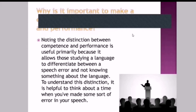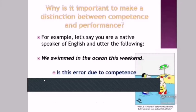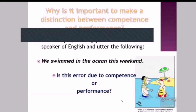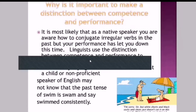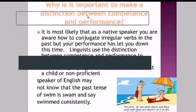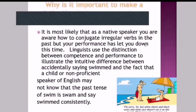To understand this distinction, it is helpful to think about a time when you have made some sort of error in your speech. For example, let's say you are a native speaker of English and you say: 'We swimmed in the ocean this weekend.' Is this error due to competence or performance? As a native speaker, you are most likely aware of how to conjugate irregular verbs in the past tense, but your performance has let you down this time. Linguists use this distinction to illustrate the difference between accidentally saying 'swimmed' and the fact that a child or non-proficient speaker may not know the past tense of 'swim' and say 'swimmed' consistently.